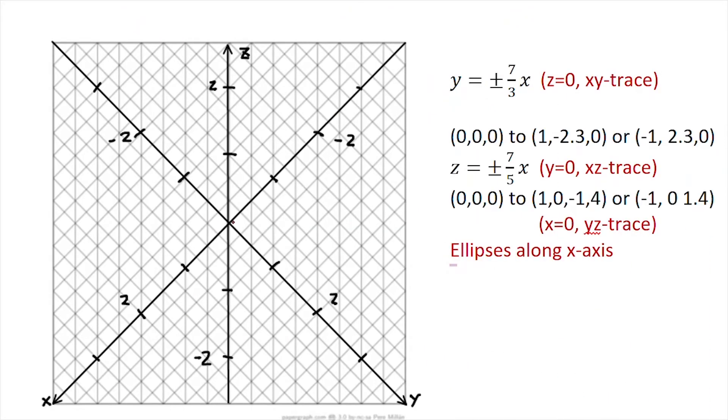So drawing my elliptic cone now, I can plot some points. Everything's going to go through the origin (0,0,0). My first line is going to be from (0, 0, 0), let's say x is 1, y is -2.3, etc. So it's going to look something like this.